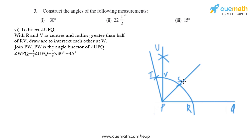We put the compass at V, take a radius more than half of RV, and draw an arc. Then we place the compass at R with the same opening and draw another arc. We mark the intersection of both arcs as W, then join PW. We have now obtained angle WPQ equal to 45 degrees.